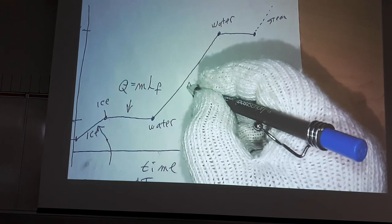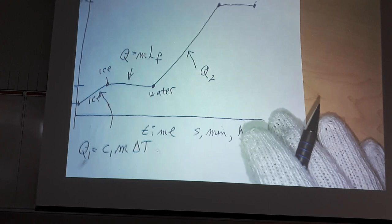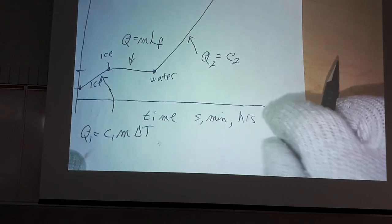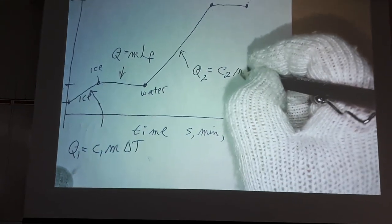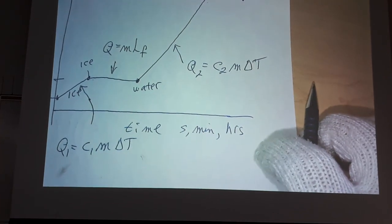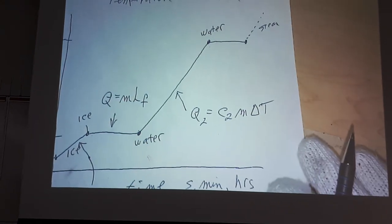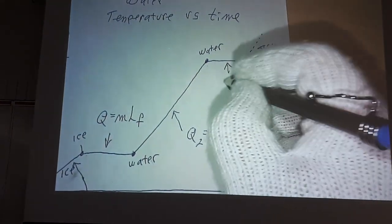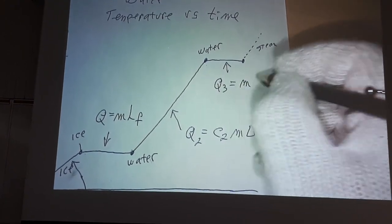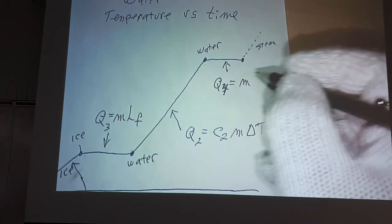And this curve has another equation. We'll call this Q2. Q2 is equal to C2 mass delta T. And up here at this plateau, you'll have Q3. And that will be Q1, Q2, we'll call this one Q3, Q4 equals mass times latent heat of vaporization.